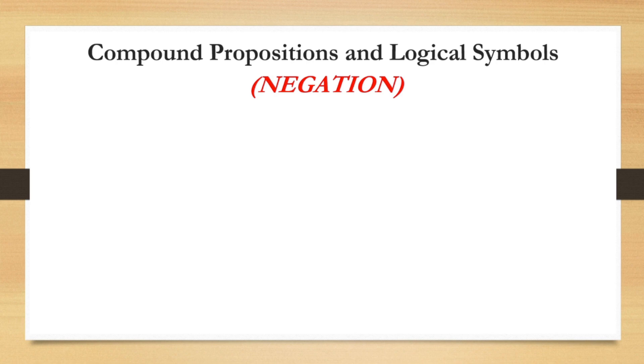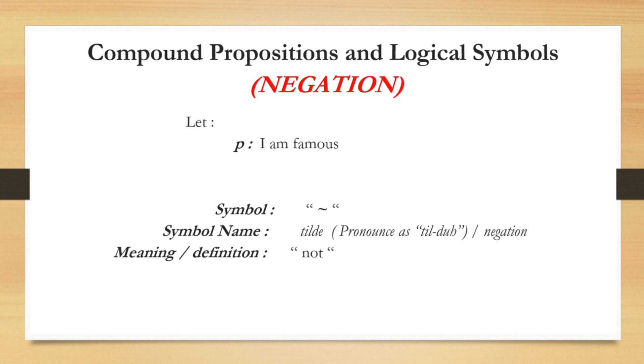Okay, let us discuss propositions and logical symbols. We have negation. Let P be a proposition defined by a statement I am famous. In symbol, we have tilde or the negation meaning not. In logical notation, we have negation P. The statement is I am not famous. Always remember, when we say negation, we are going to associate the proposition to the word not or any words related to not.